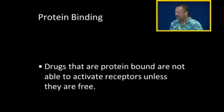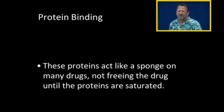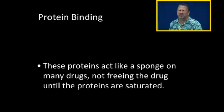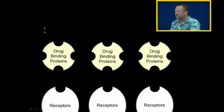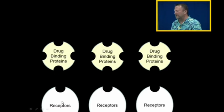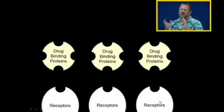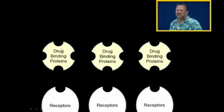Drugs that are protein bound are not going to be able to activate receptors unless they are free. These drug binding proteins act like a sponge and they're not going to free the drug unless the proteins are completely saturated. These are the drug binding proteins with places where drug can bind, and these are the receptors. When the drug comes in contact with these receptors, some kind of regulatory change occurs. The drug binding proteins just stick to drug and don't let them activate receptors.